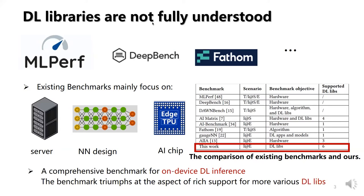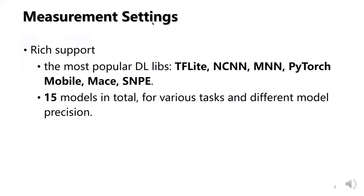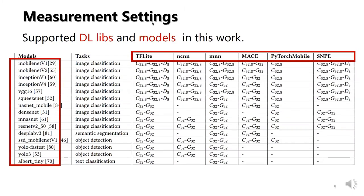No prior work has even dived deep into the ecosystem of model libraries and provided quantitative results on their performance. Our benchmark targets on-device inference and focuses on rich support for more DL libraries. The benchmark includes six popular DL libraries: TFLite, NCNN, MNN, PyTorch Mobile, MIS, and SNPE. It also contains 15 models, spanning from image classification and object detection to NLP.